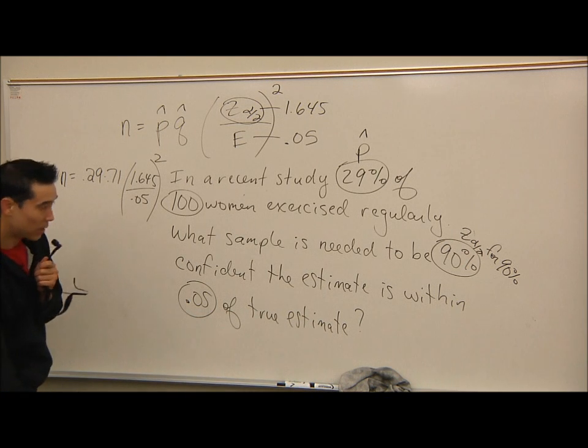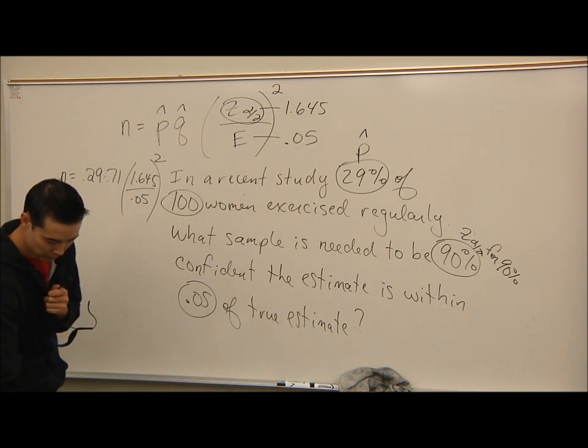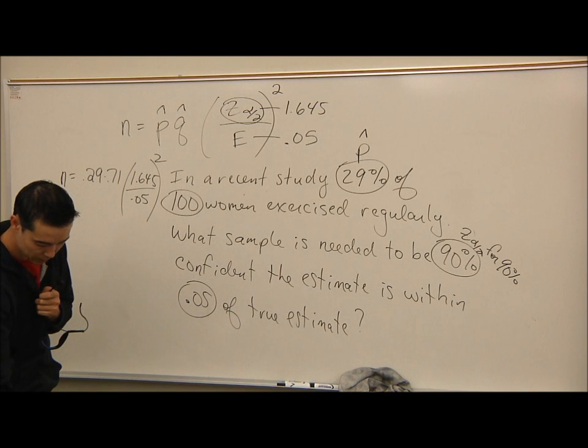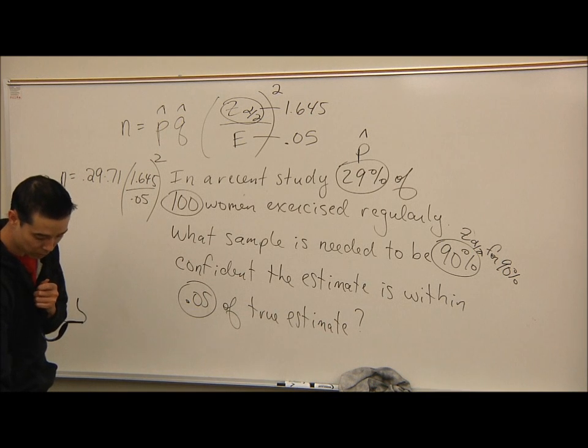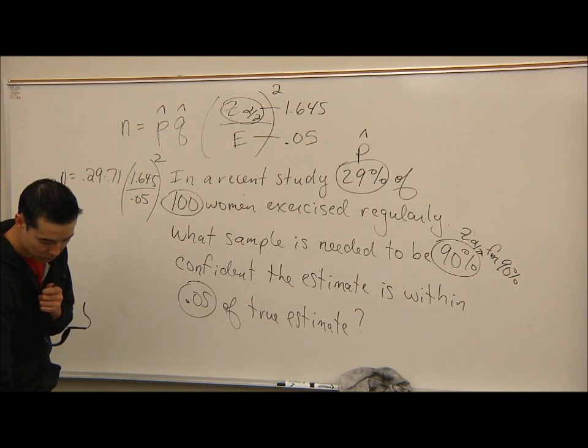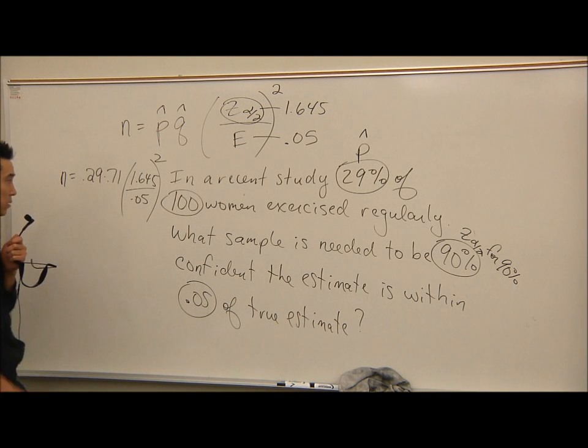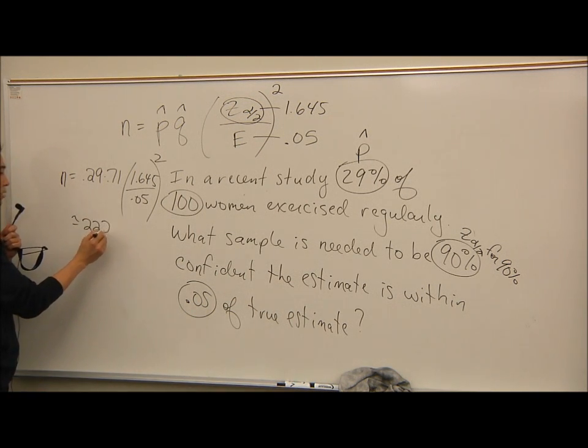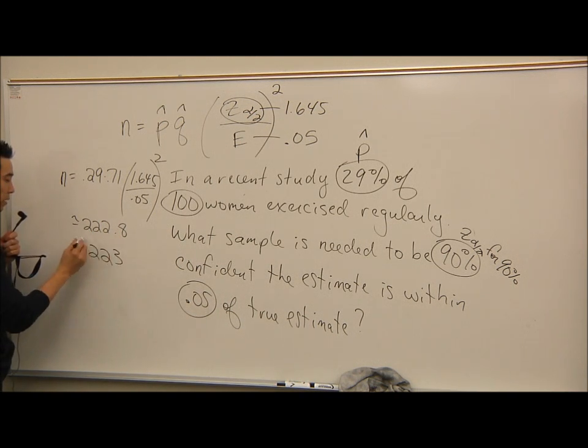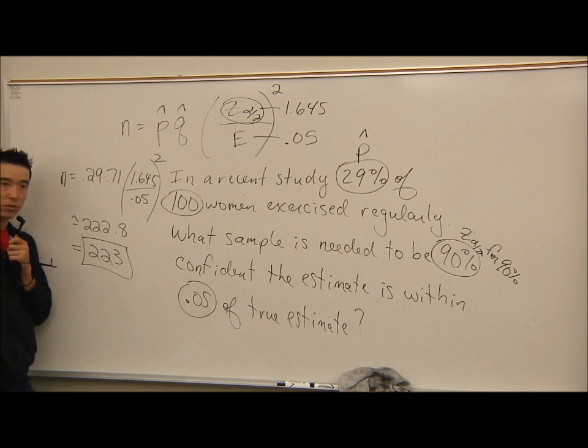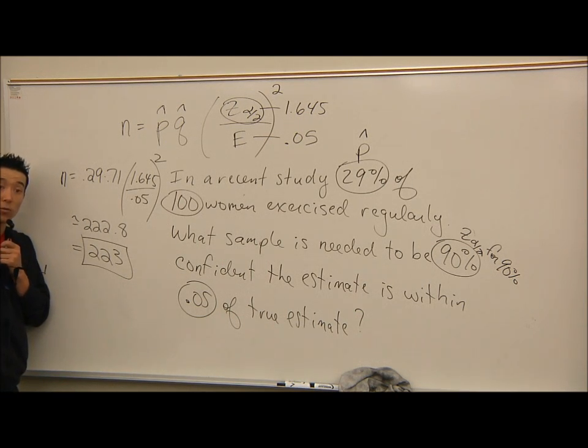Whatever value you get, you have to round it up. We get .29 times .71 times 1.645 divided by .05 all squared. This comes out to be approximately 222.8 something. But we know we have to round that up to 223. Even if it was 222.1 something, you still round it up to the next whole value because we're talking about how large a sample is needed.